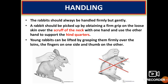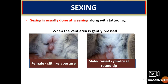Rabbits should always be handled firmly but gently. A rabbit should be picked by obtaining a firm grip of the loose skin over the scruff of the neck with one hand and use the other hand to support the hindquarters. Young rabbits can be lifted by grasping them firmly over the loins, with fingers on one side and thumb on the other. Sexing is easy in rabbits and is usually done at weaning along with tattooing. When the perineal area is gently pressed, females will show a slit-like opening and males will show a raised cylindrical round tip.